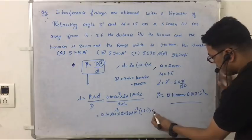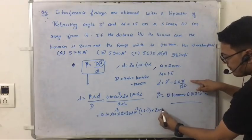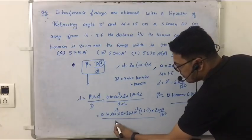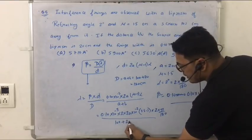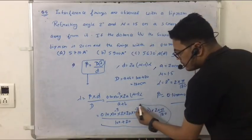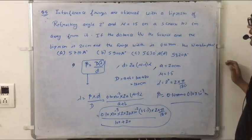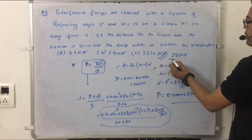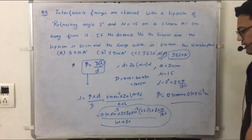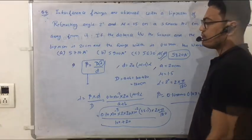Now let's take lambda. Lambda is beta multiplied by D upon capital D. And after substituting all values and multiplying, the answer you get is 5820 angstrom. Okay, you can see this.